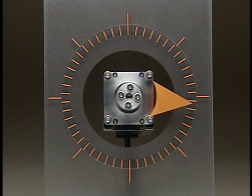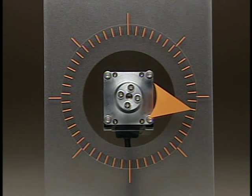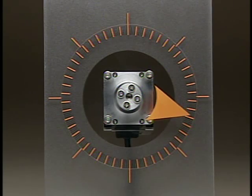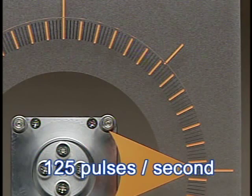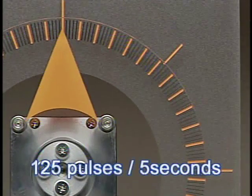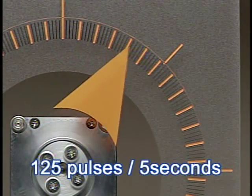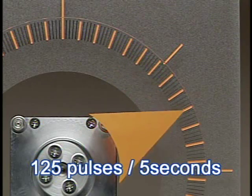You can control the motor speed with the pulse signals. For example, the motor speed required to obtain a 125 pulse rotation amount in a second is different from what is required to obtain the same rotation amount in 5 seconds.